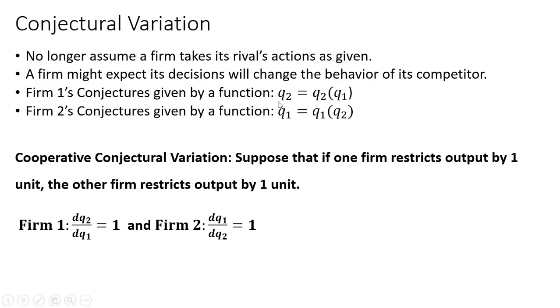In this case, if we were to take the derivatives of each of these functions, assuming this cooperative conjectural variation, the derivatives will be plus one. If firm 1 reduces its output by one unit, the other firm will cooperate reducing and restricting its output by one unit. The typical Cournot model assumes that both of these derivatives equals zero.